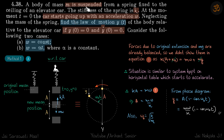We are given a mass m suspended from an elevator car. Initially, the car is at rest and the mass is also at rest. Then the car starts going up with an acceleration W. We need to find Y as a function of time. Relative to the car, its initial Y is 0 and its initial velocity is also 0. We need to consider two cases: in the first, acceleration is constant, and in the second, it is alpha T.